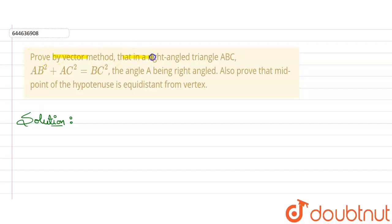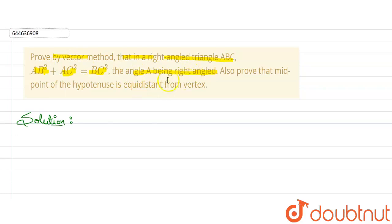This question asks us to prove by vector method that in a right-angle triangle ABC, AB² + AC² = BC². We have to prove this by vector method only, where angle A is the right angle.